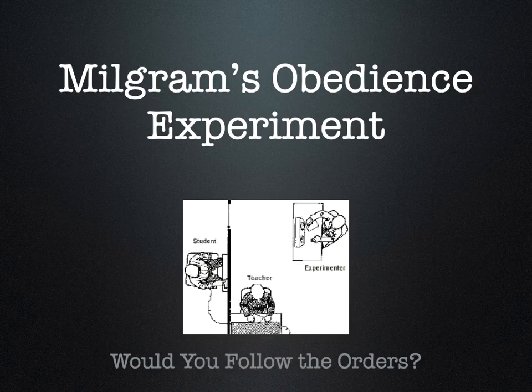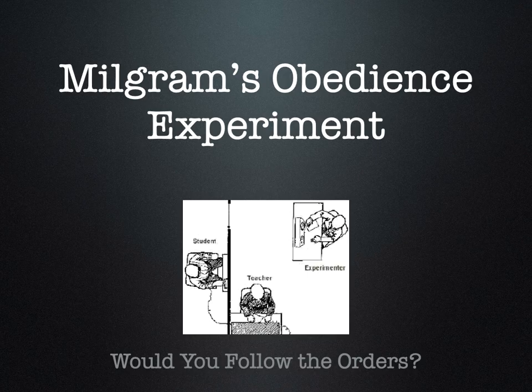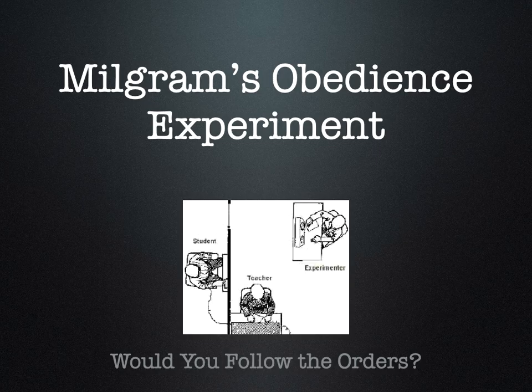The next experiment is Milgram's Obedience Experiment. Here's another picture you're going to see again. This is another experiment that involved deception. You see three people: the experimenter, the student, and the teacher. The subject of this experiment is going to be the teacher — the teacher is the only person who's not in on the experiment. The student is actually an actor who's in on the experiment, and the experimenter is there to continually encourage the teacher to keep performing what they're supposed to be doing.